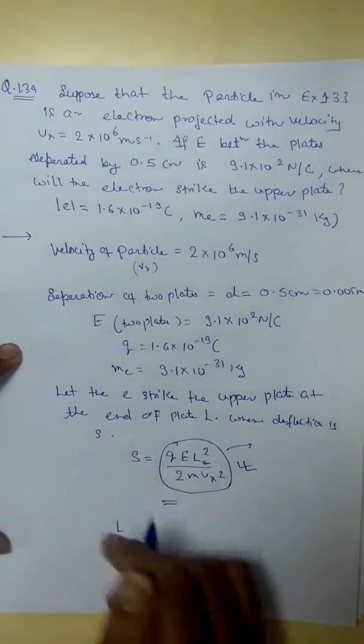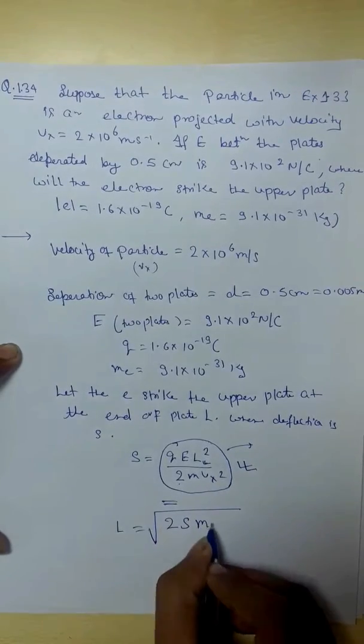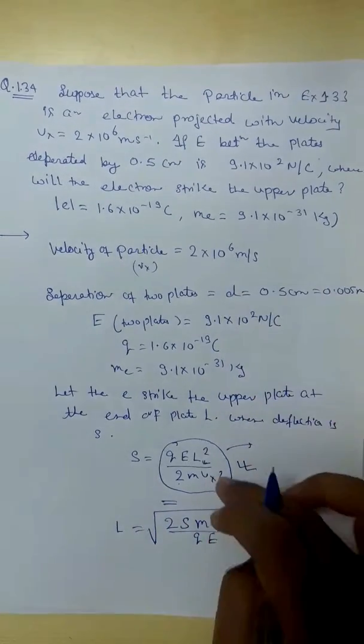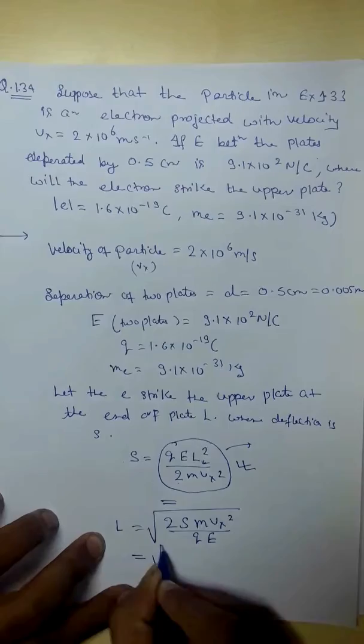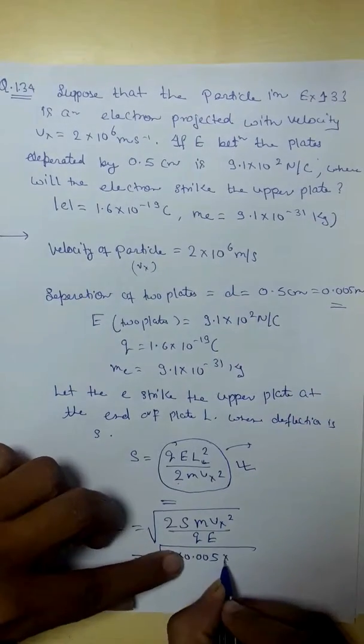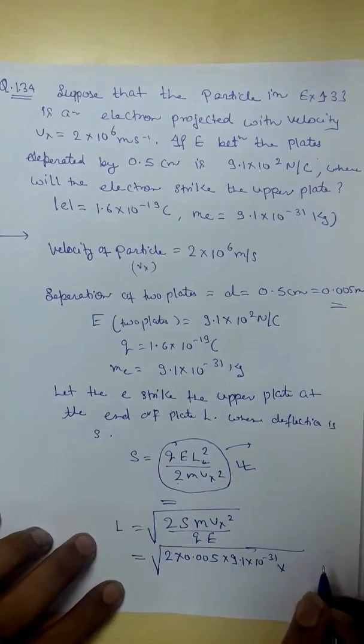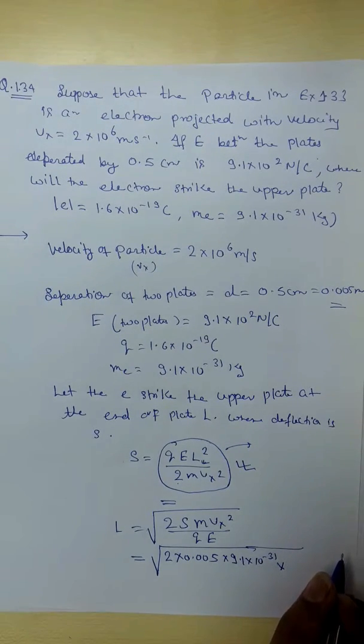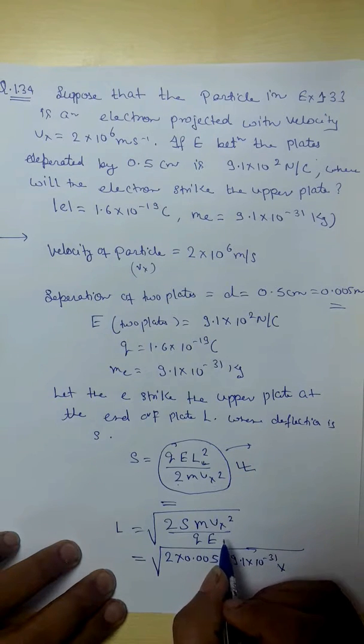So, yes, we have to refer to the previous question. So, if we have to apply to this question, we have to put the values. 2s is 0.005 meter, mass of the electron you know 9.1 into 10 to power minus 31, and Vx is 2 into 10 to power 6. So you have to just put the values.